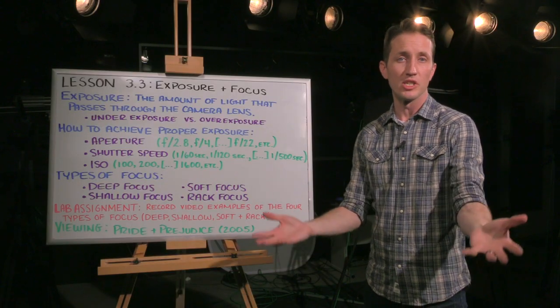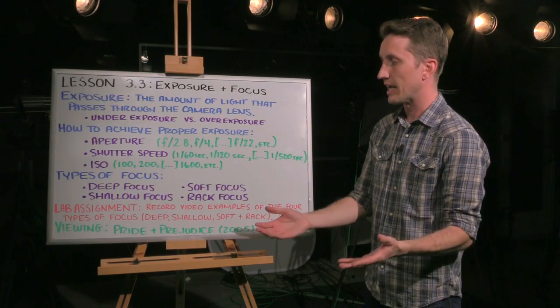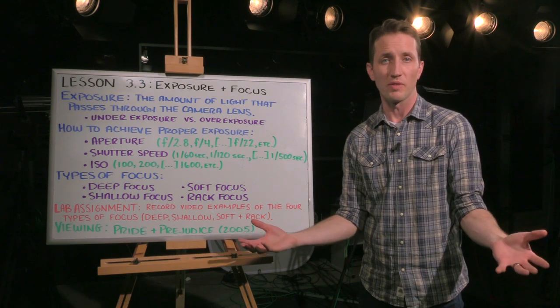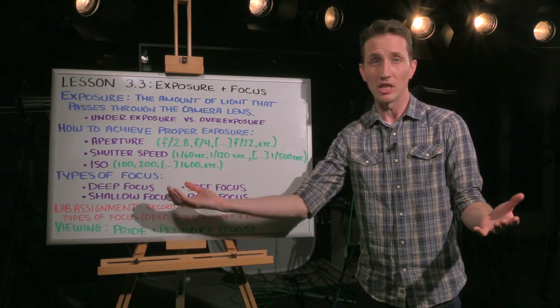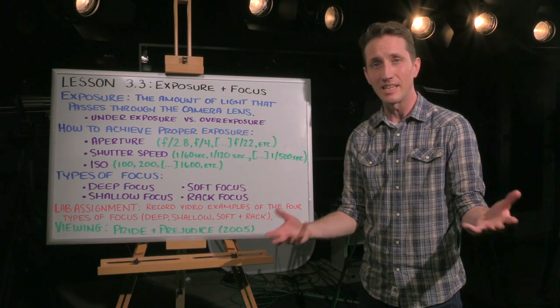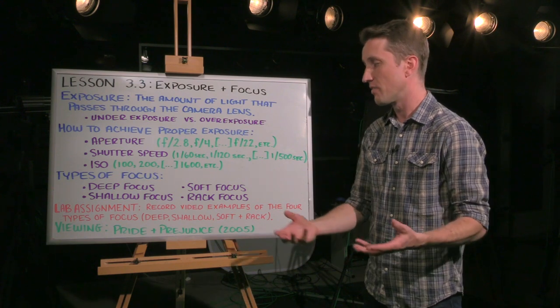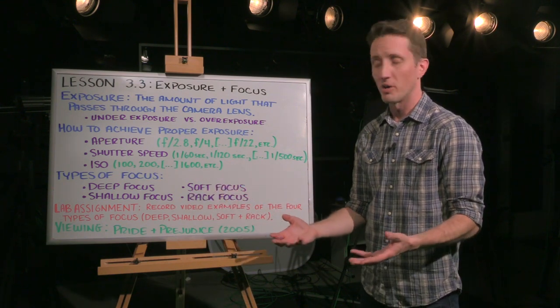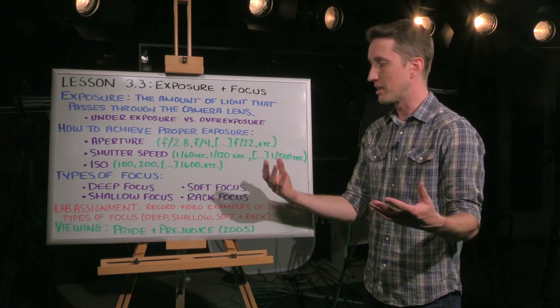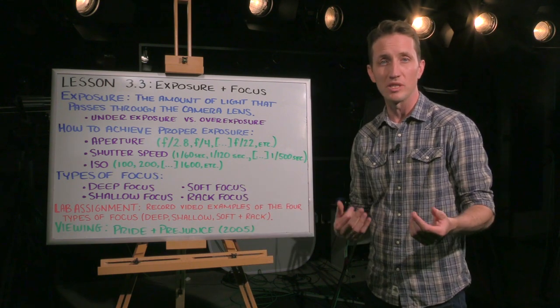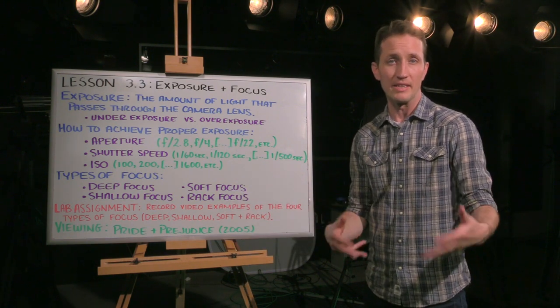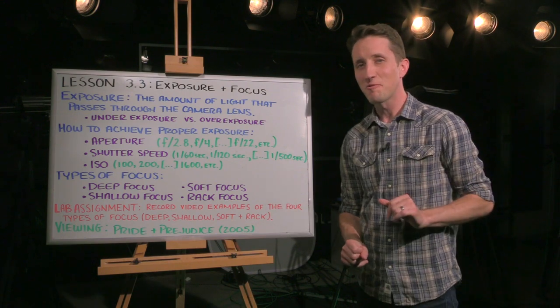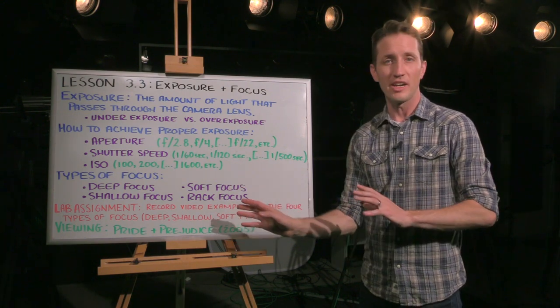And then you have ISO, which is the camera's sensitivity to light. Now if you're outside shooting in direct sunlight, you might want a really low ISO because the sun is such an intense light. Whereas if you're shooting in a really dark room, you might want a high ISO because that is going to increase the camera's sensitivity to what little light exists in that room. But not so fast.